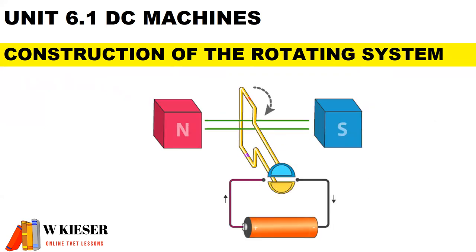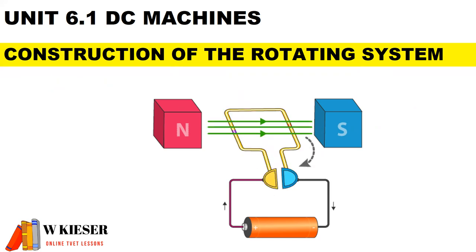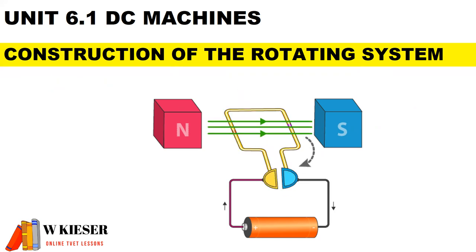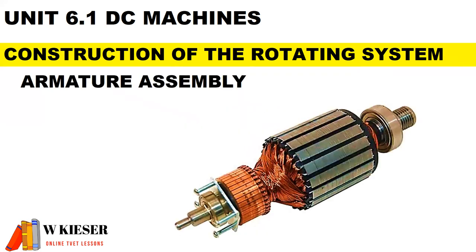Now let's take a look at the construction of the rotating system — we're only looking at the construction. In the later parts of the videos we'll be taking a look at DC motors and DC generators. Here we have the armature assembly, which is the rotating part and consists of the shaft, the bearings, the armature core, the armature windings, and the commutator.